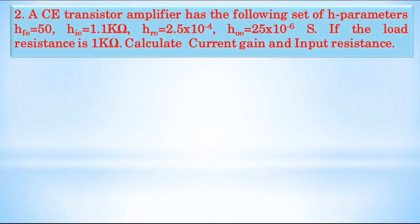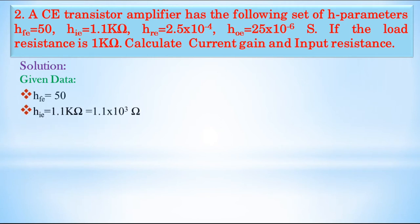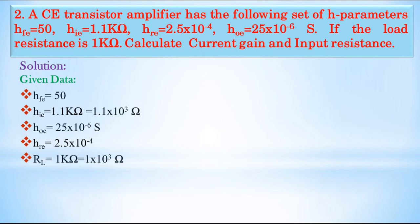Now let us look at the second problem. A common emitter transistor amplifier has the following parameters: HFE = 50, HIE = 1.1 kilo ohm (1.1 × 10³ Ω), HRE = 2.5 × 10⁻⁴, HOE = 25 × 10⁻⁶ Siemens, and load resistance RL = 1 kilo ohm (1 × 10³ Ω). We have to calculate current gain AI and input impedance ZIN.